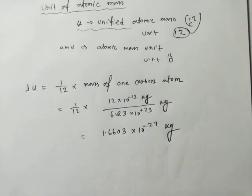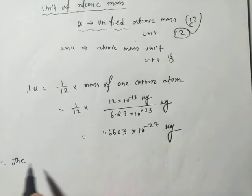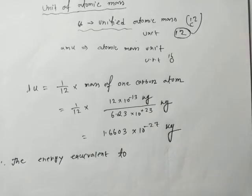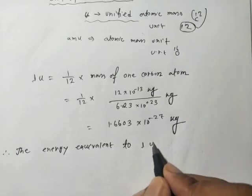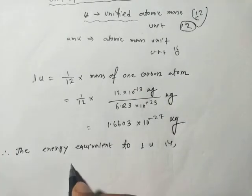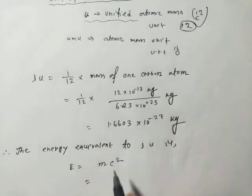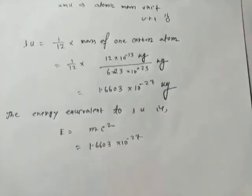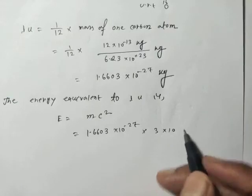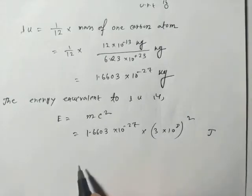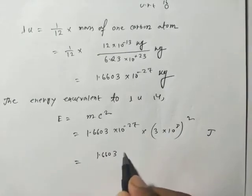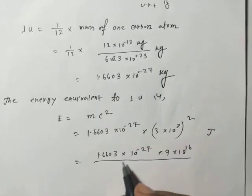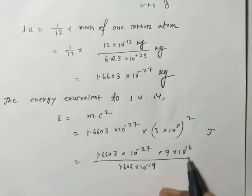The energy equivalent to 1u is: E equals mc^2. Here m is 1.6603 × 10^-27 and c is 3 × 10^8 whole squared. The unit will be joules. This gives us 1.6603 × 10^-27 × 9 × 10^16 divided by 1.602 × 10^-19 electron volts.